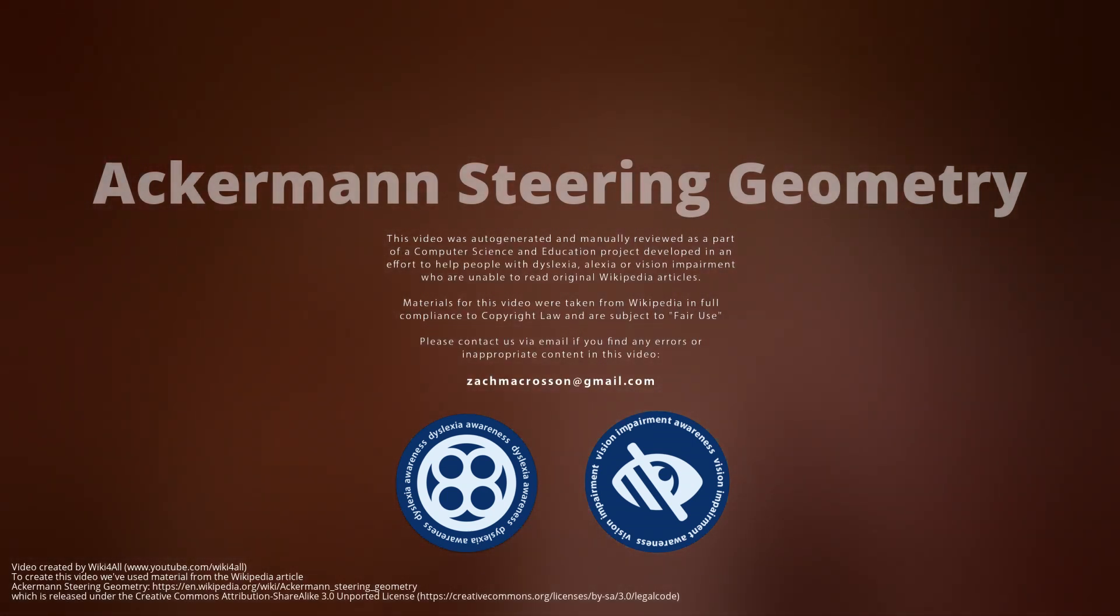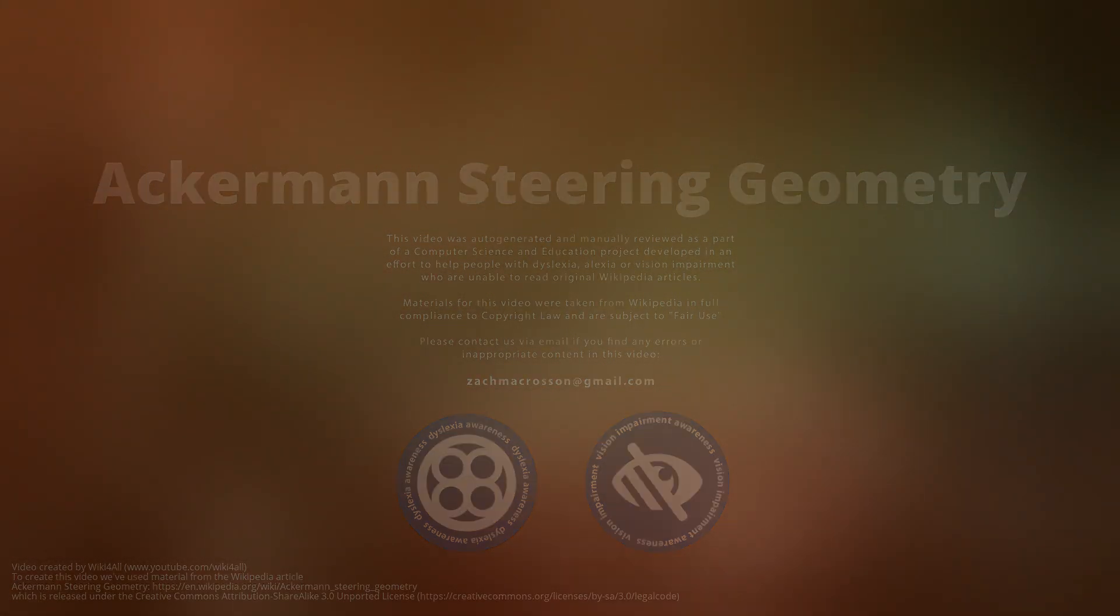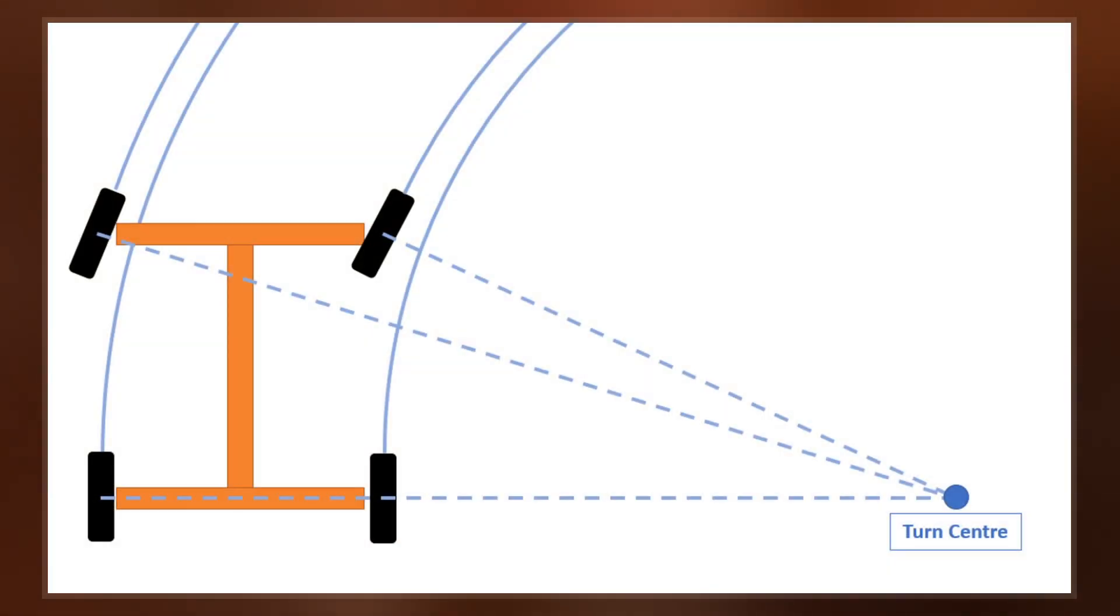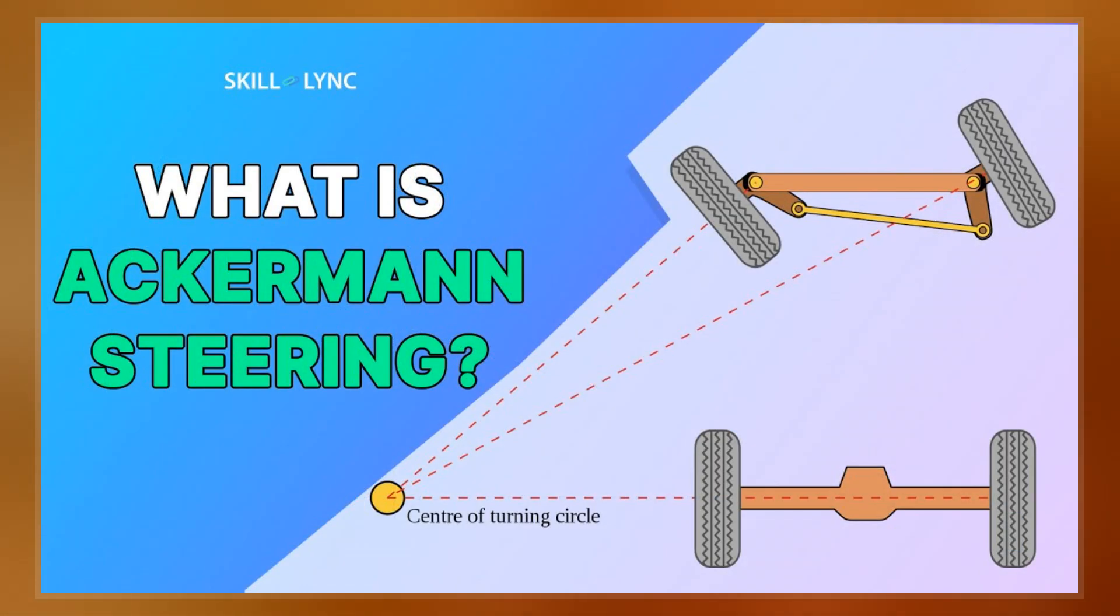Ackerman steering geometry is a geometric arrangement of linkages in the steering of a car or other vehicle designed to solve the problem of wheels on the inside and outside of a turn needing to trace out circles of different radii.